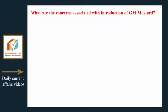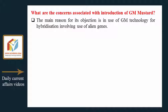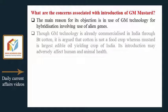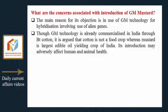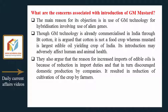The main reason for objection to GM mustard is the use of GM technology involving alien genes. Although GM technology is already commercialized in India through BT cotton, critics argue that cotton is not a food crop, whereas mustard is India's largest edible oil-yielding crop. Its introduction may adversely affect human and animal health.